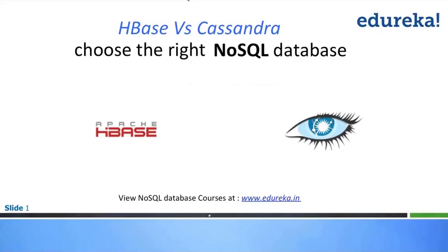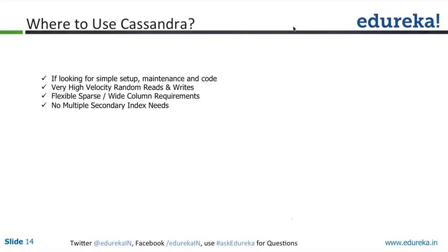Hi everyone, as Moit said, I'm Tulshaker, so I'll take you through the session today. What we are actually going to talk about today is Cassandra and HBase. The most popular ones in the NoSQL field are Cassandra, HBase, and Mongo. So we're talking about three of them.